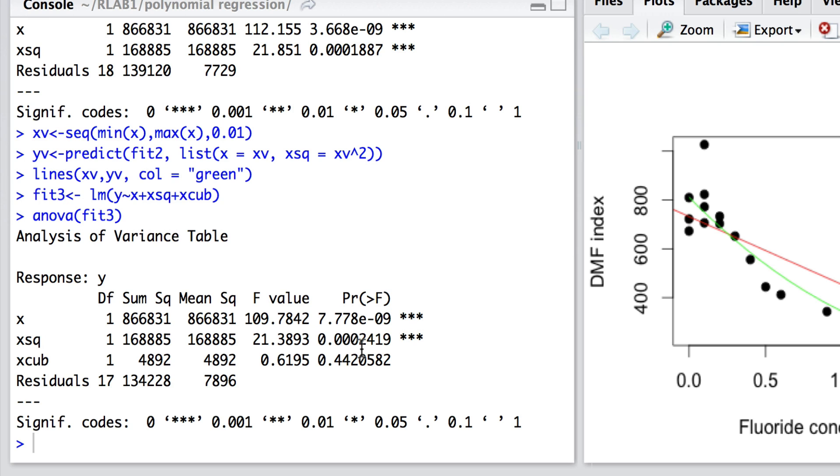So we're left with a view overall that the quadratic—the model with x and x-squared—is superior because adding that extra term does not explain significant variability in the model.